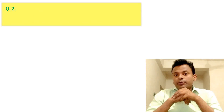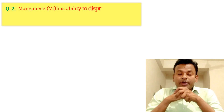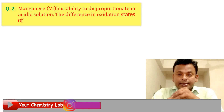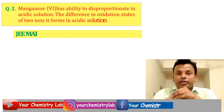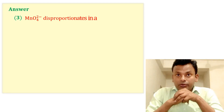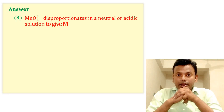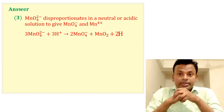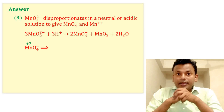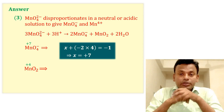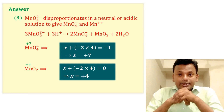Question two: Manganese has the ability to disproportionate in acidic solution. The difference in oxidation state of the two ions it forms in acidic solution is? This question was set in JEE Main 24th June 2022 evening set. The answer is three. MnO₄²⁻ disproportionates in neutral or acidic solution to give MnO₄⁻ and Mn⁴⁺. The oxidation state of Mn in MnO₄⁻ is plus seven and in Mn⁴⁺ is plus four, so the difference is seven minus four equals three.